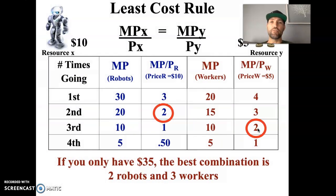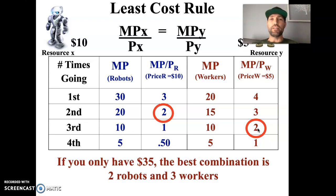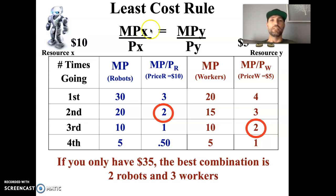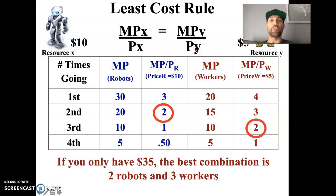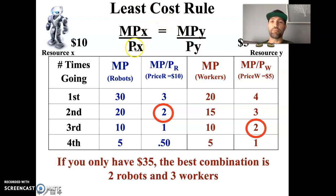Now let me cover the way you will probably see this problem on an AP exam, either free response or multiple choice. There are four variables: the marginal productivity of one resource and the price of that resource, and the marginal productivity and price of another resource. If you're combining more than two factors of production, you can set them all equal — just an equal ratio of marginal productivity per dollar.